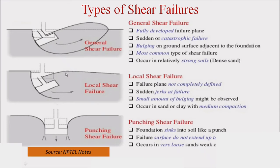In local shear failure, bulging occurs from foundation to ground level but in a not well-defined condition — it is an almost linear inclined line. The slippage line does not connect to the bulging line; sometimes it may jerk inside the soil. These two failures — general and local — can also be referred to as tilting failures.